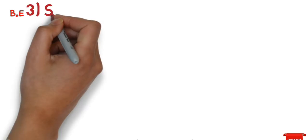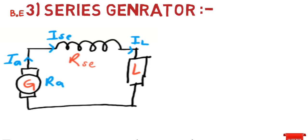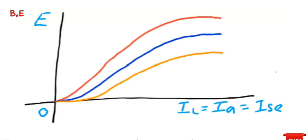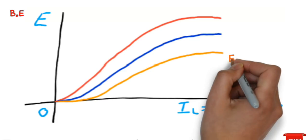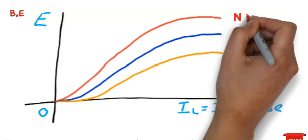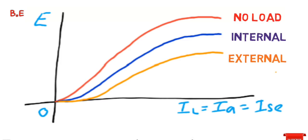Now let's look at the series generator. The circuit diagram is shown in the figure and the current equation gives IA = IL = ISE. Increasing load increases all these parameters. The series generator shows an OCC (no load characteristic), an internal characteristic, and an external characteristic. The difference between no load and external characteristic is because of losses.